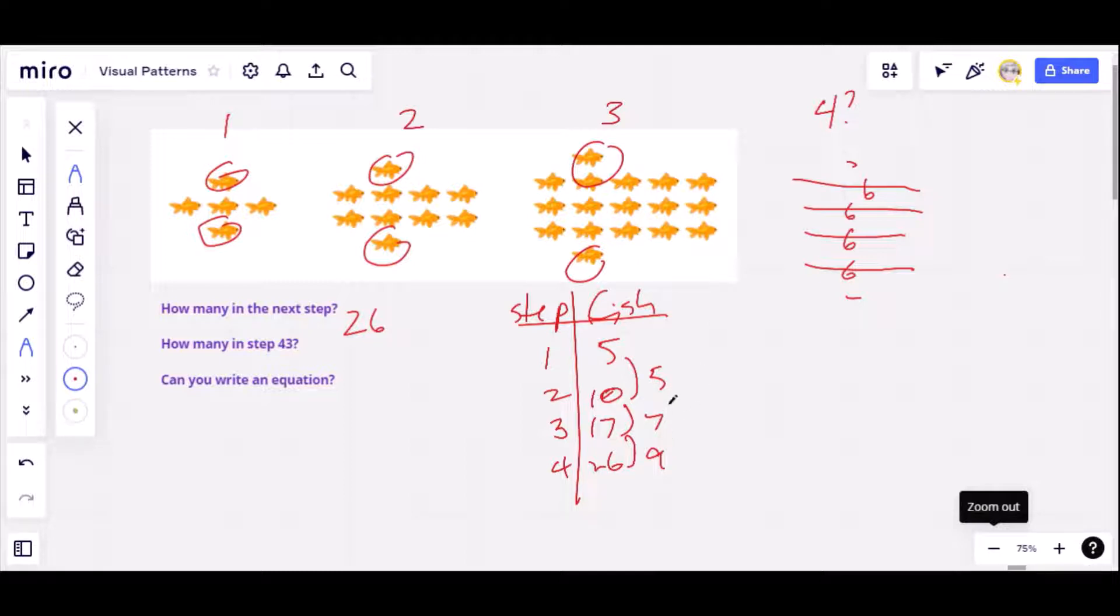And so what we do is we take the difference of the differences, and this is a way to check if it's a quadratic. 7 minus 5 is 2. 9 minus 7 is 2. Aha! When you get a constant, in this case a 2, in the difference of the differences, you know it's a quadratic.